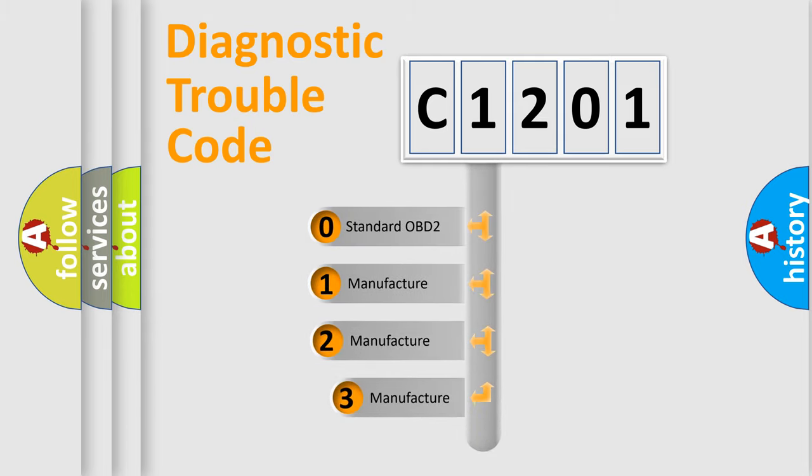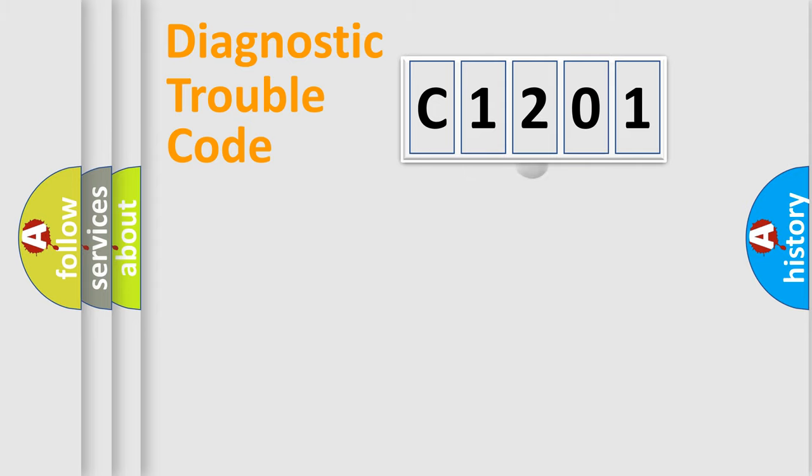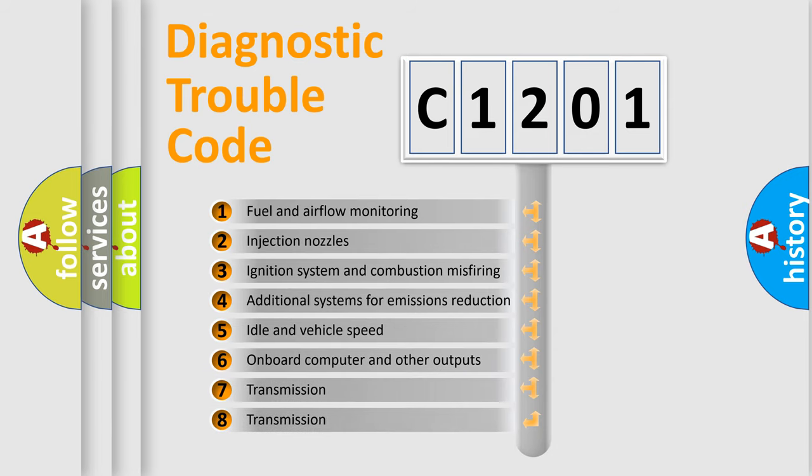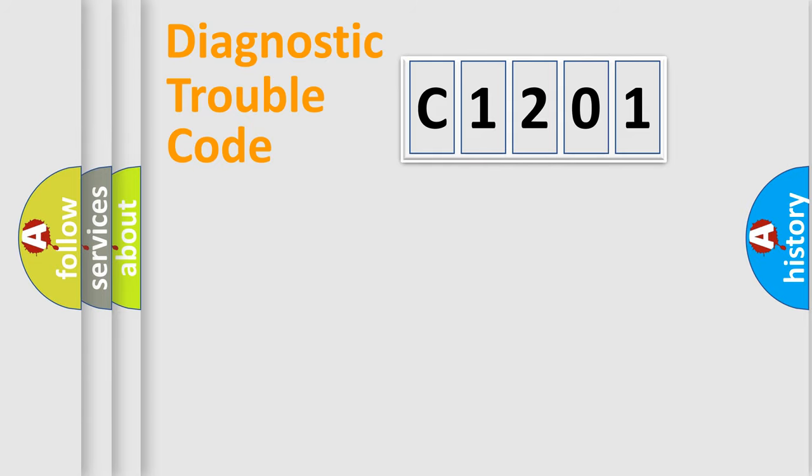If the second character is zero, it is a standardized error. In the case of numbers 1, 2, or 3, it is a manufacturer-specific error. The third character specifies a subset of errors. This distribution is valid only for standardized DTC codes.